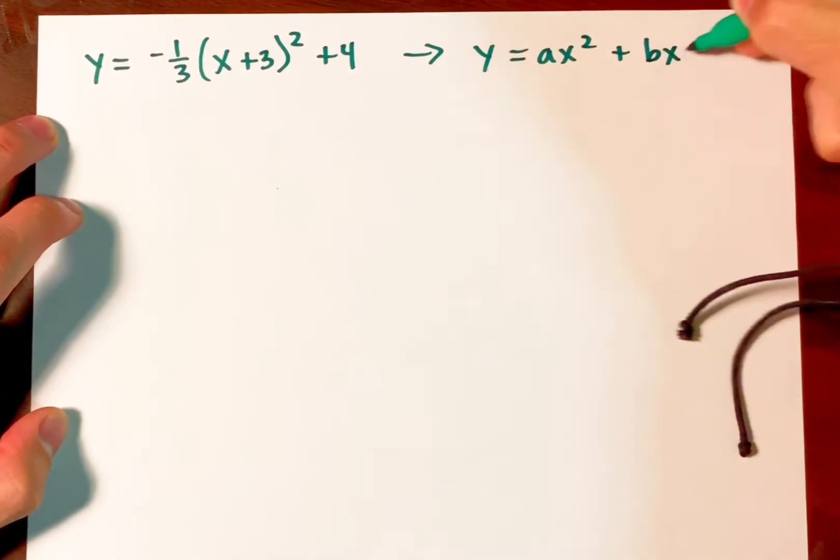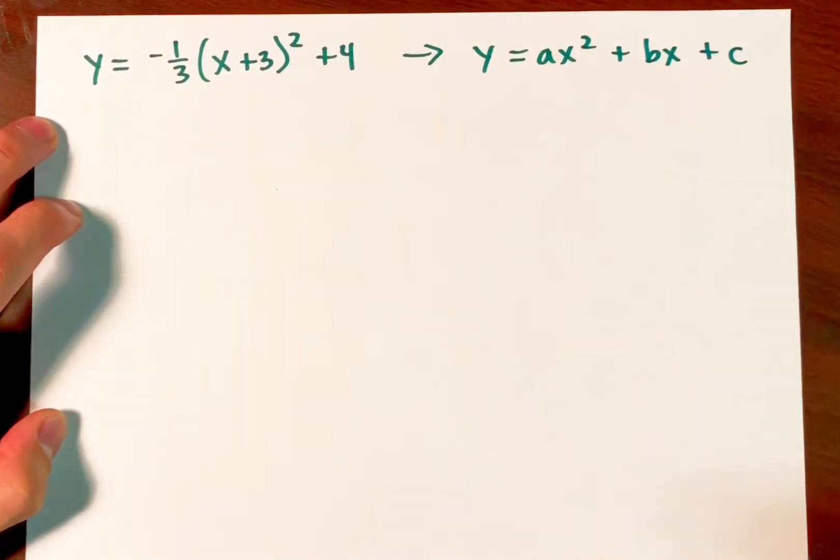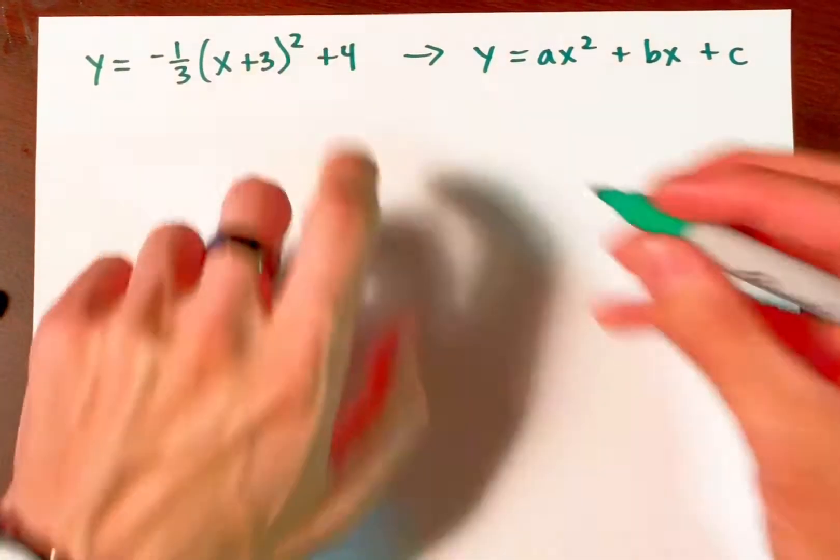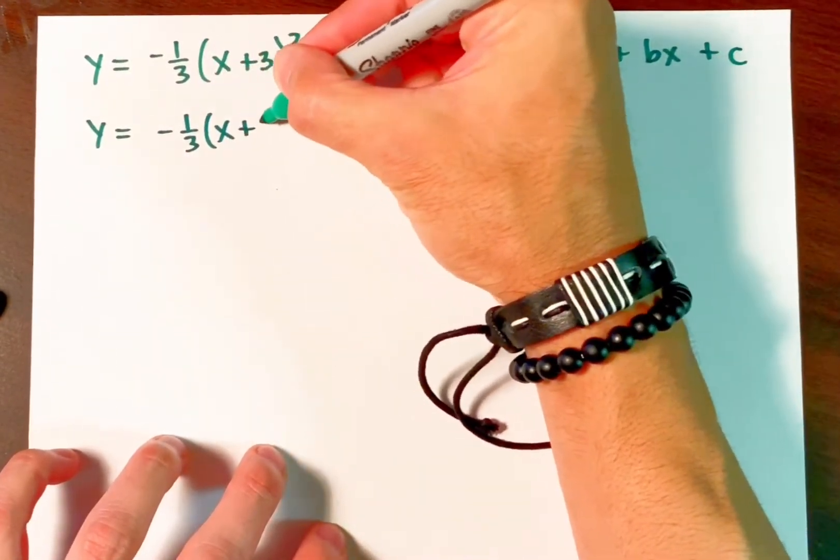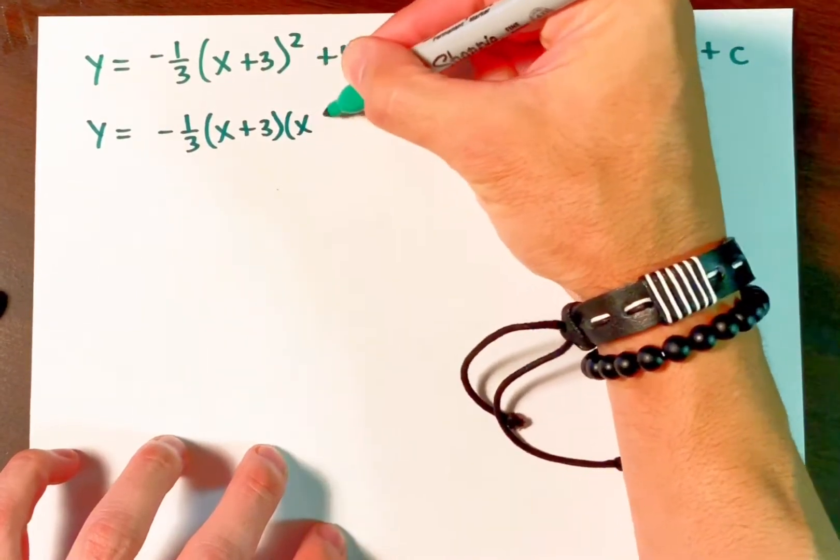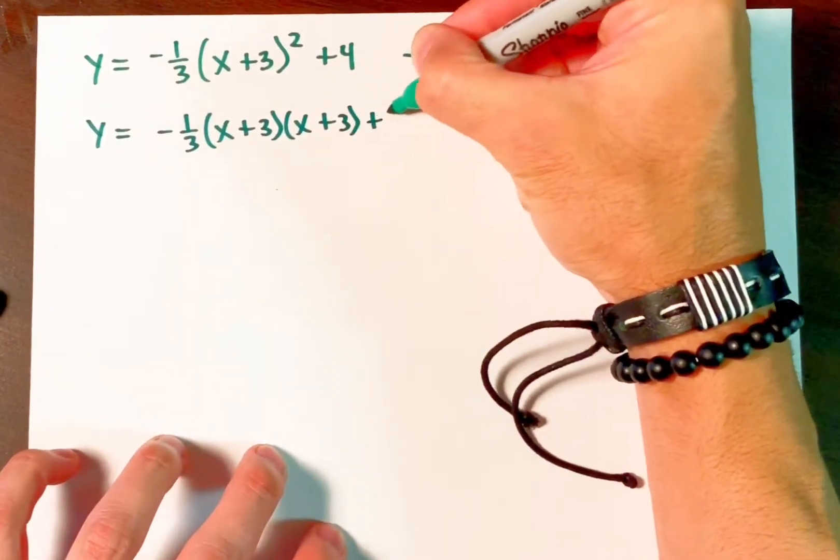So here is the procedure that you can take. Recall what a square is. The square of an object means that you are multiplying that object with itself two times. So I can write it as follows.